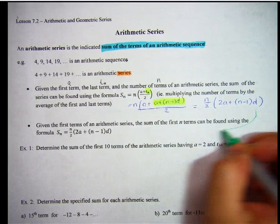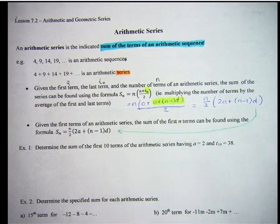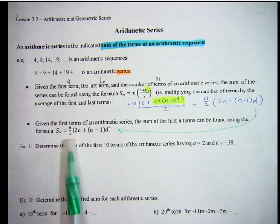So given the first terms of an arithmetic series, the sum of the first N terms can be found using this formula. So if you don't know what the last term is, but you know what the common difference is, then you should use this form.